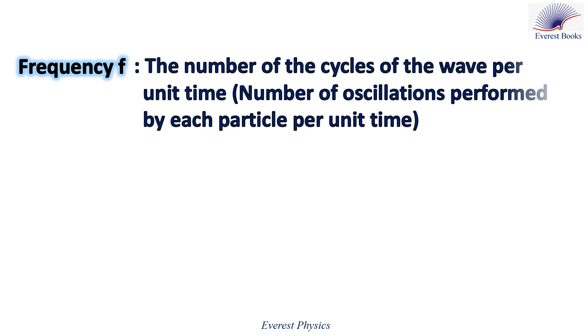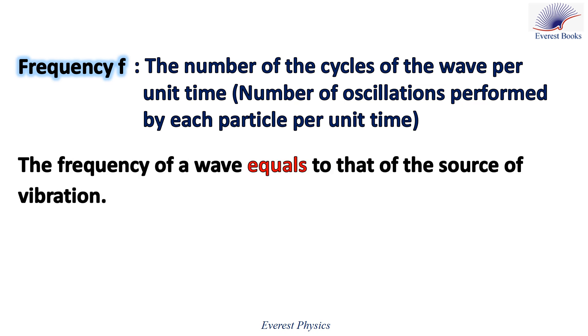The third property is the frequency which is the number of the cycles of the wave per unit time, or the number of oscillations performed by each particle per unit time. The frequency of a wave equals to that of the source of vibration. Then the source of vibration imposes its frequency to the wave and to each particle in the medium.